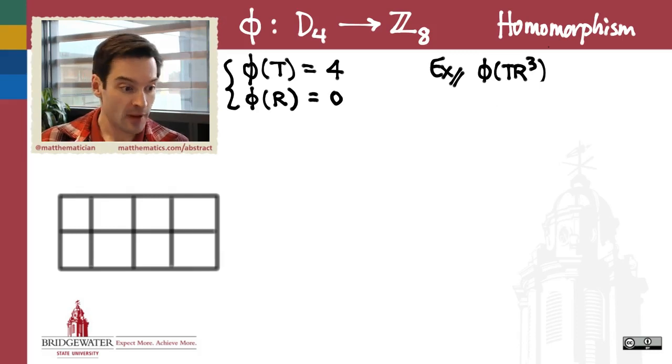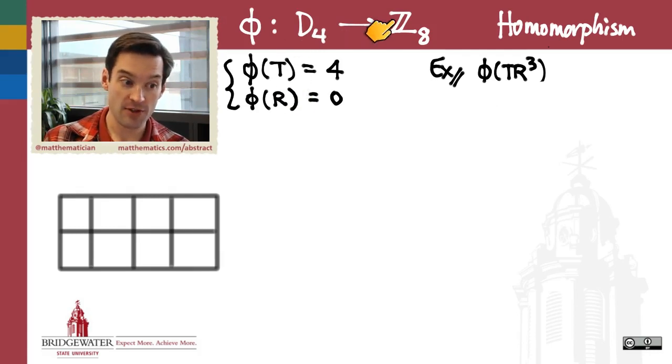Here's an example. I've got the dihedral group with a square, D₄, and I've got the cyclic group of order 8, ℤ₈, integers with addition mod 8. I'm going to define a function from D₄ to ℤ₈ by the requirement that I'm going to send the element t from D₄ to the number 4 in ℤ mod 8, and I'm going to send r to 0.